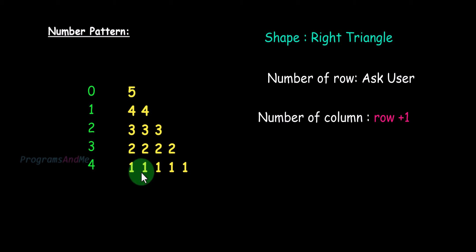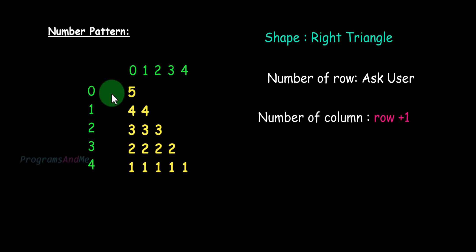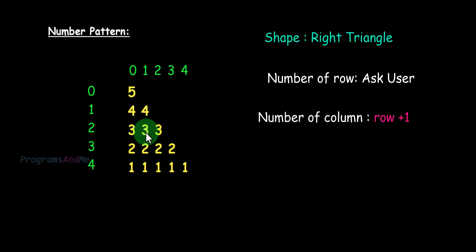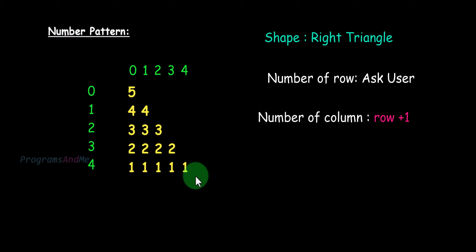Next, this is a number pattern and we want to print numbers in different positions. In the first row at row 0, column 0, I want to print 5. In the next row I want to print 4 in both columns. In the next row I want to print 3, then 2, and in the last row I want to print 1 in every column.